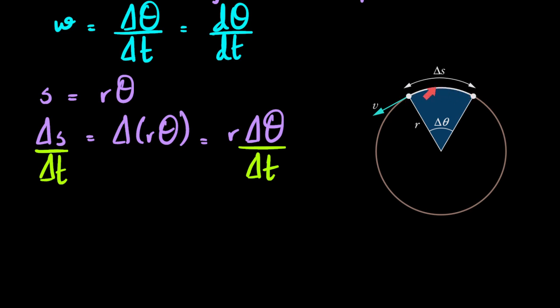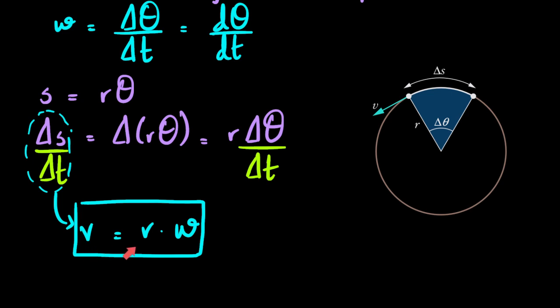So now what does this turn into? Δs upon Δt is the linear velocity of this object, so Δs upon Δt becomes v. On the other side of the equation, you still have r, and then Δθ upon Δt is just equal to omega. So this is the relationship that we came up with, v equals rω, and this is going to be very important in this chapter, not only with regards to helping us solve questions but also to derive some more formulas.